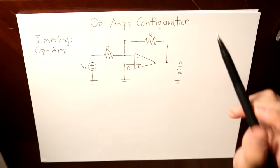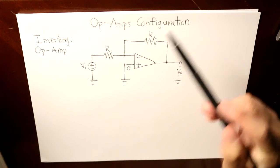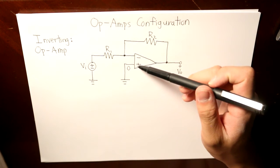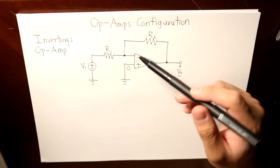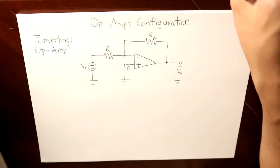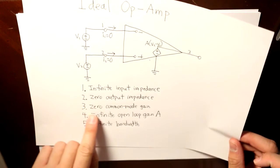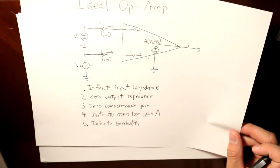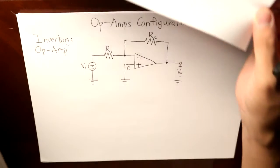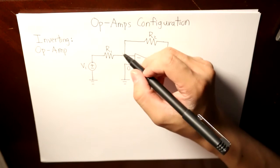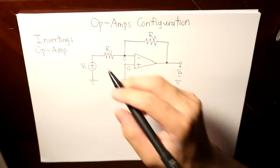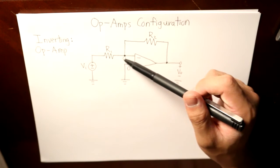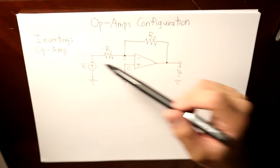One of the characteristics of an op amp is that the voltage along the positive and negative input terminals are going to be the same, because there is zero common mode gain. Since the positive terminal is zero, the negative terminal is also zero. In an inverting op amp, the current travels from Vi to Vo.